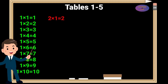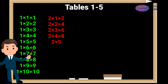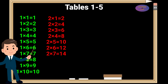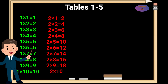2 times 1 is 2, 2 times 2 is 4, 2 times 3 is 6, 2 times 4 is 8, 2 times 5 is 10, 2 times 6 is 12, 2 times 7 is 14, 2 times 8 is 16, 2 times 9 is 18, 2 times 10 is 20.